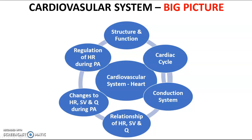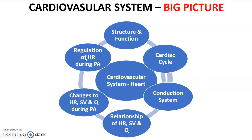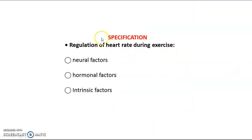We know the heart is myogenic - it creates its own heartbeat via an electrical impulse generated by the SA node, down to the AV node, bundle of His and Purkinje fibres. However, when we start exercising, we have to increase our heart rate, and this involves the brain. Today we'll look at three specific factors: neural mechanisms, hormonal factors, and intrinsic factors that control heart rate.